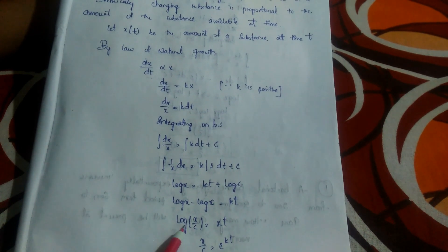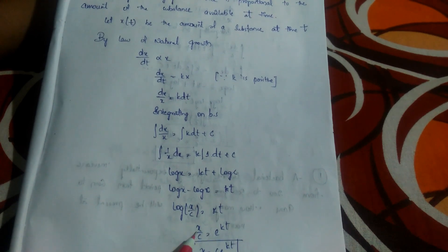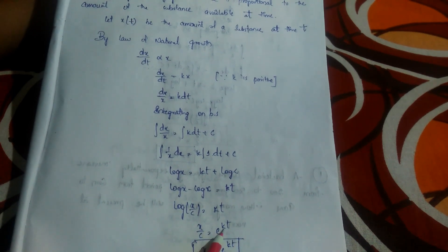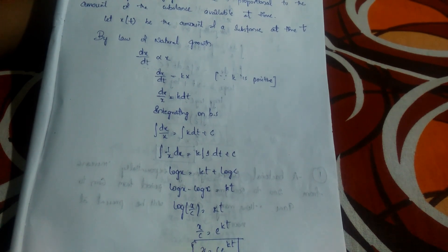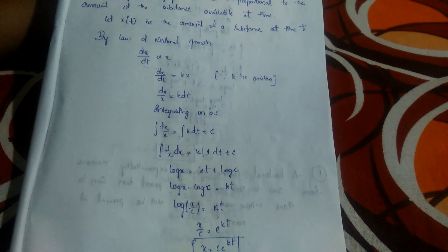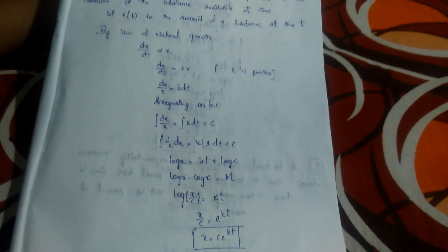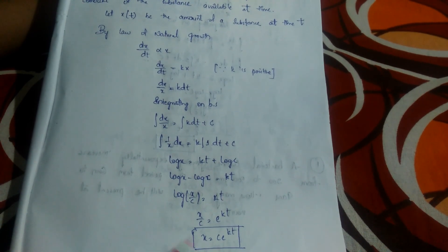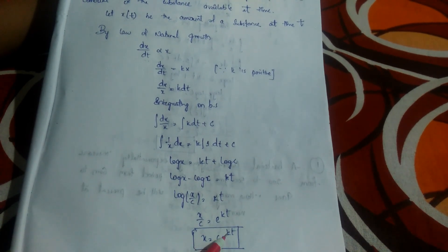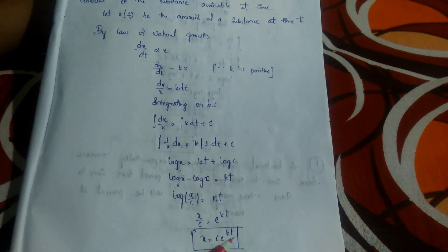Sending log C to the left-hand side: log x minus log C equals kt. Using the formula log a minus log b equals log(a/b), we get log(x/C) equals kt. Removing the logarithm gives x/C equals e^(kt), so x equals C·e^(kt). This is the formula for the law of natural growth.